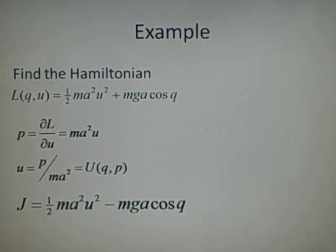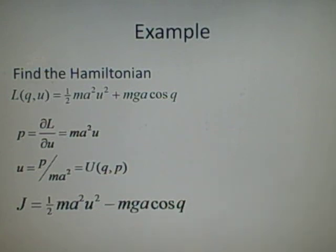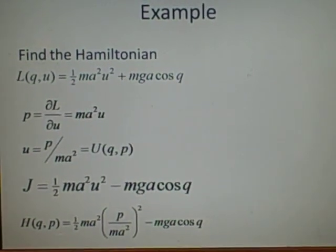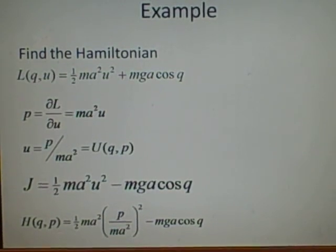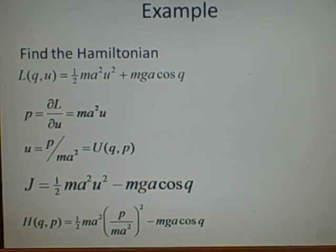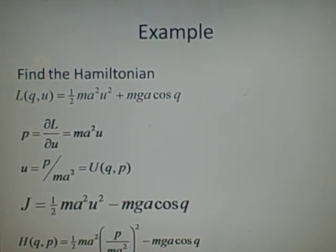And now all we've got to do is the final step: substituting our big U for the little u. So we put the p/(ma²) in there. And this is your Hamiltonian. Which is ½ma² times (p/(ma²))² - mga cos q. I hope that made sense. It's quite tricky.